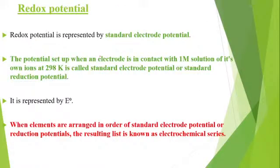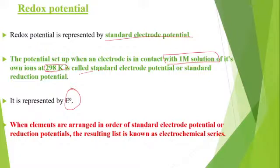For standard electrode potential, we put a zero superscript (E°). The conditions are: the solution must be 1 molar concentration, and the temperature must be 298 K, that is 25°C. When temperature and concentration are fixed, it is called Standard Electrode Potential, which we check in the electrochemical series.